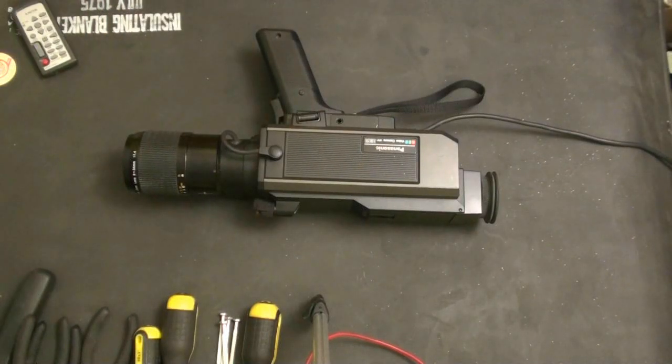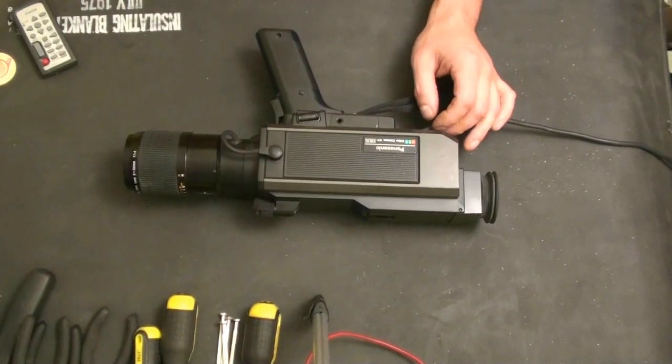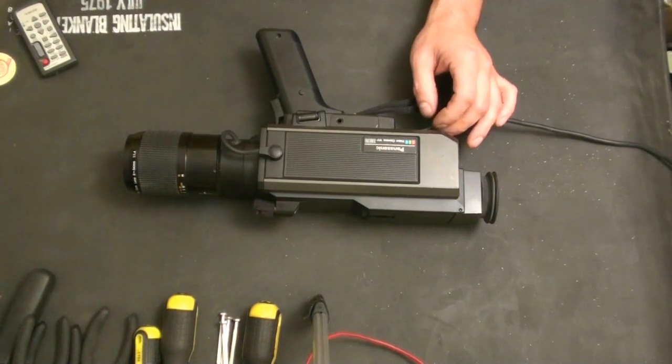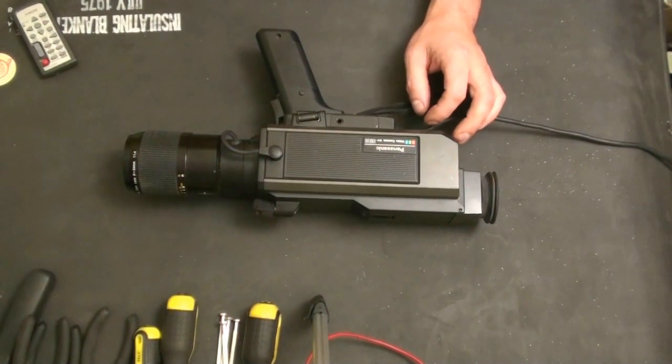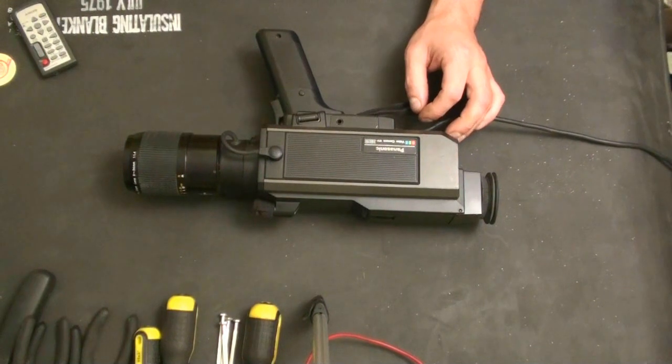Okay, so we're here with the Panasonic video camera model WV3060, and we're going to do a teardown on this to see what's inside.